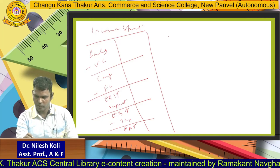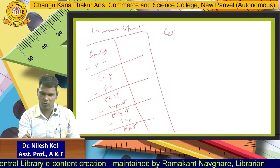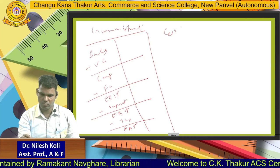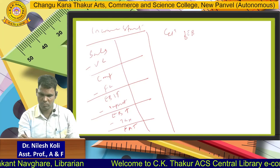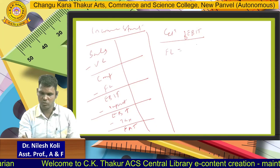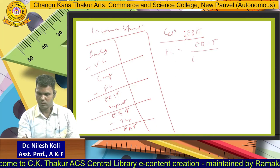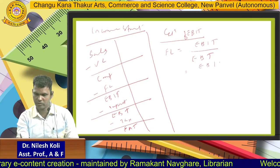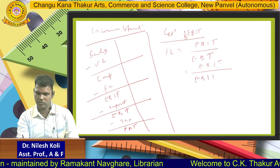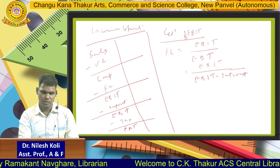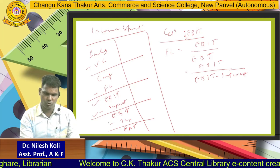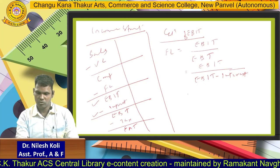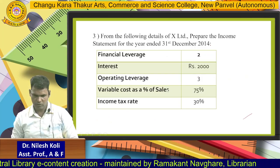The formula for financial leverage is: FL = EBIT / (EBIT minus interest). So financial leverage equals EBIT upon EBIT minus interest. We put in the given value: financial leverage is 2, and interest is 2000. So: 2 = EBIT / (EBIT minus 2000).